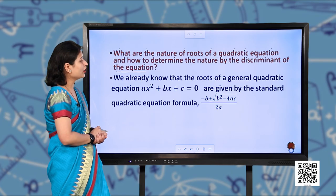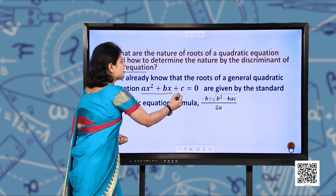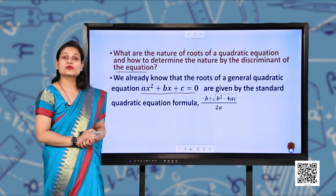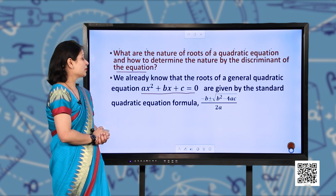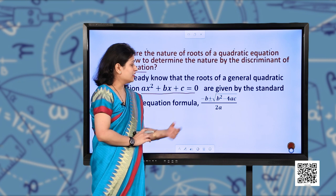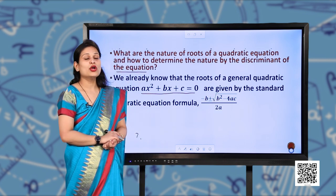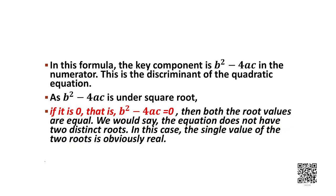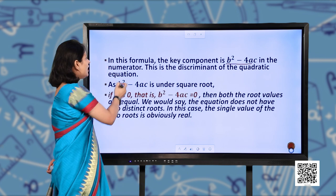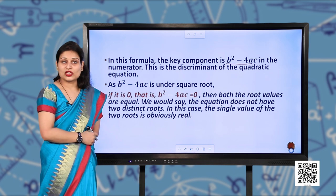We already know that the roots of a general quadratic equation Ax² + Bx + C = 0 are given by the standard quadratic formula: minus B plus or minus square root of B² minus 4AC, divided by 2A. In this formula, the key component in the numerator is B² minus 4AC, which is the discriminant of the quadratic equation.